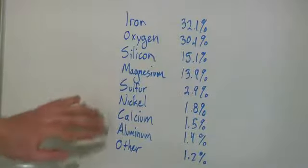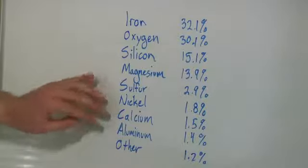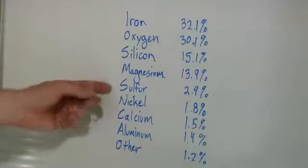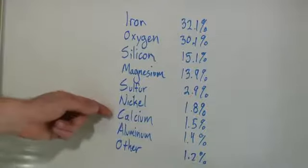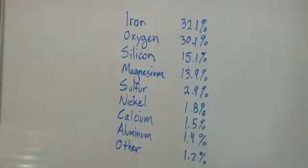You also have four additional elements that occur in much smaller amounts. Sulfur is at 2.9%, nickel is at 1.8%, calcium is 1.5% and aluminum is 1.4%, with all the other elements only taking up 1.2% of the Earth's composition.